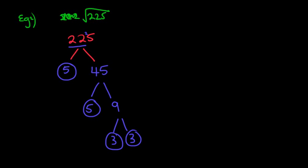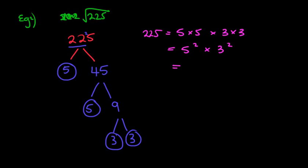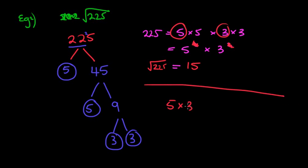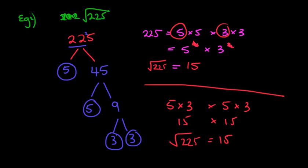So we're going to rewrite that as a product of its prime factors: 225 equals 5 times 5 and 3 times 3. Alternatively you may have written this straight away as 5 squared times 3 squared. Hopefully you'll think — we need the little squares so we can cancel them out. The square root of 225: we cancel them out by getting rid of the little squares, and we're simply left with 5 times 3, which is 15. Alternatively, you could pair up a 5 and a 3 from each side to get 15 and 15, and therefore the square root of 225 is simply 15.